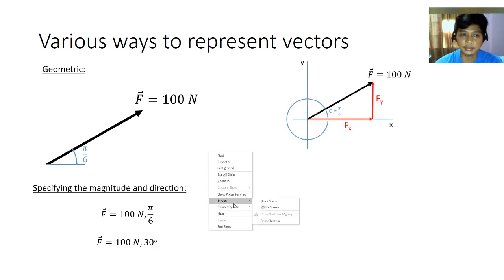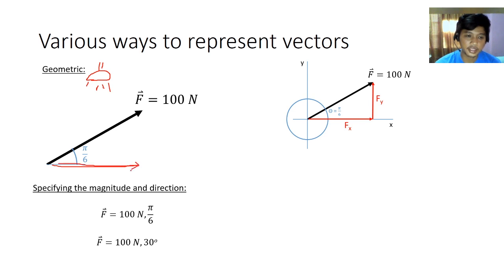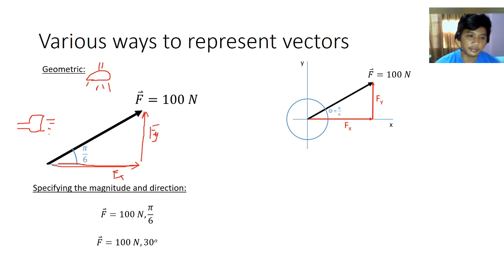Another way to represent vectors is by identifying the x and y components. A vector has an x component and a y component. The x component is the shadow of the vector along the x-axis. Imagine a flashlight shining down on the force vector — the shadow it casts on the x-axis is the x component. And if you shine a light from the side, it will cast a shadow on the wall — that is the y component of the vector.